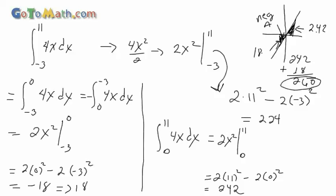So we had to break this up into two separate parts because the region from negative 3 to 0 is a negative area — it's below the x-axis. Anytime it's below the x-axis we'll have to break up our integral. Notice that when we tried the direct approach we said the answer would be less, because we ended up getting negative 18, so we'd be taking 242 and subtracting off that negative 18. That's not the true area. So the correct area is 260.